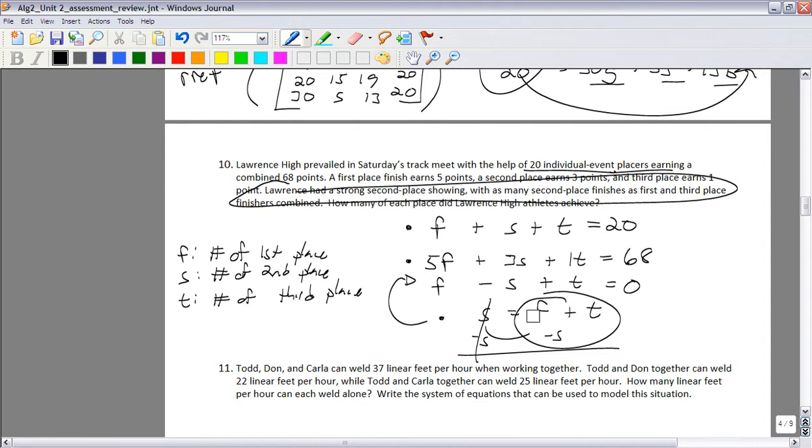So if I were to do that, this is the matrix I would come up with. So there's one, one, one, one, one. So it would be one, one, one, 20, five, three, one, 68, one, negative one, one, and zero. I do reduced row echelon on that, and that would give me an answer.